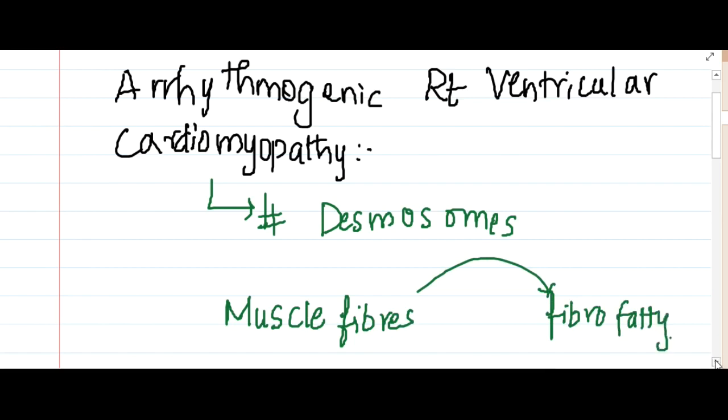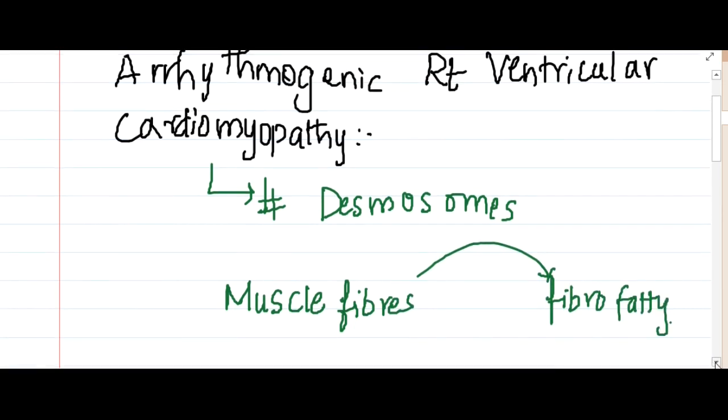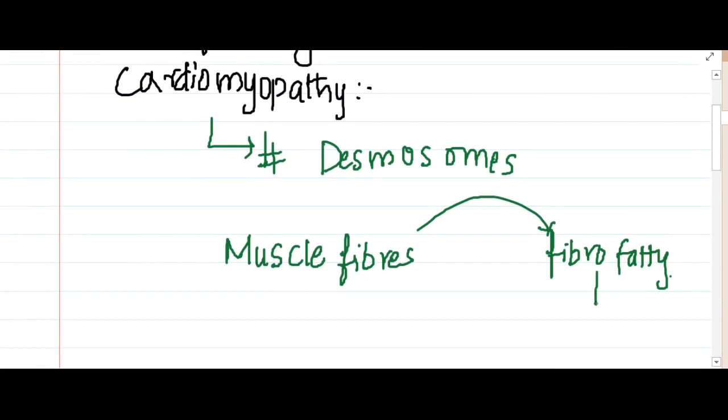This is seen in arrhythmogenic right ventricular cardiomyopathy. Because of this fibro fatty tissue, this will lead to arrhythmias.